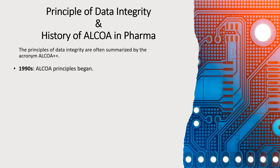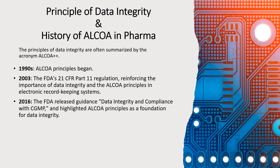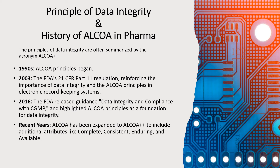The ALCOA principles began in the 1990s. In 2003, FDA 21 CFR Part 11 regulation reinforced the importance of data integrity and the ALCOA principles in electronic record-keeping systems. In 2016, the FDA released guidance on data integrity and compliance with CGMP, highlighting the ALCOA principles as a foundation for data integrity. In recent years, ALCOA has been expanded to ALCOA++ to include the additional attributes: Complete, Consistent, Enduring, and Available.